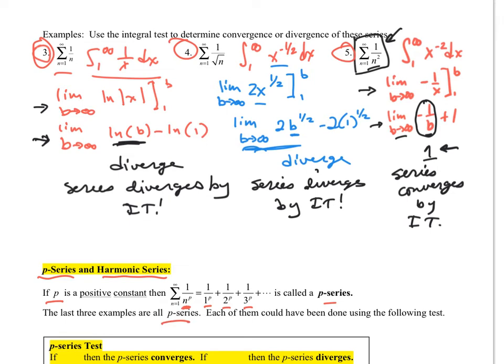The last three examples are all p-series and could have been done with the following test. However, we used the integral test. This one is the harmonic, which diverged. This has exponent 1 half. Going back, this has exponent 1 in the p-series representation. This has exponent 1 half. This has exponent 2. The 2 converged, the 1 half and 1 did not.